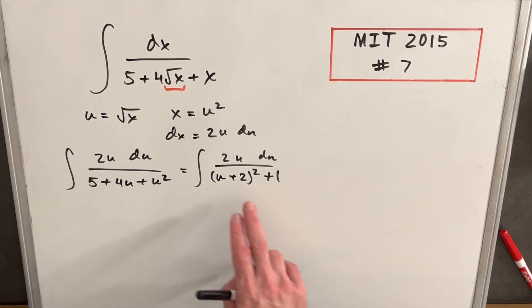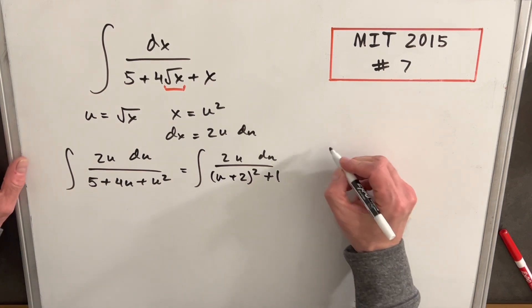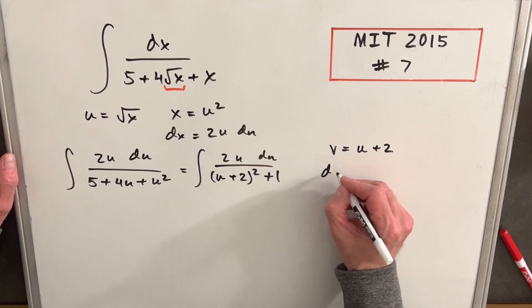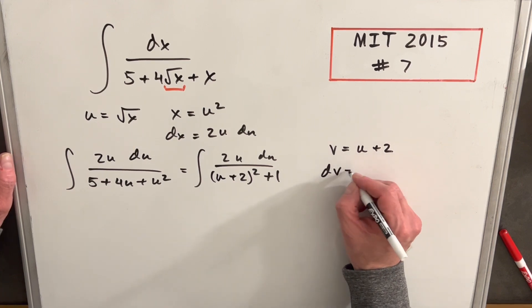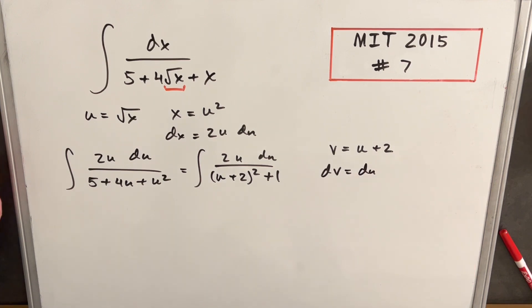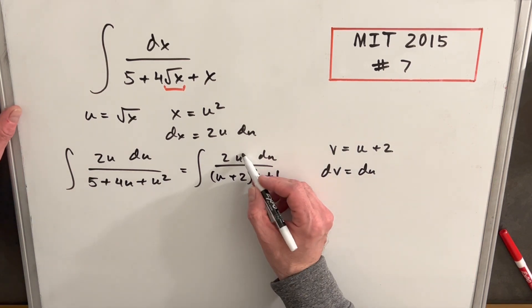And this is starting to look more like something we can do. What I want to do, I'm just going to make another substitution for u plus 2. I'm going to say v equals u plus 2. Nice thing about this is dv. Take the derivative of this. It's just going to be du. Derivative of 2 is 0. So dv is du.